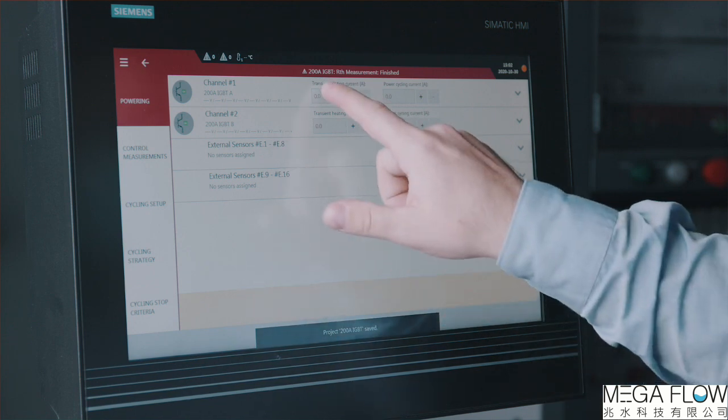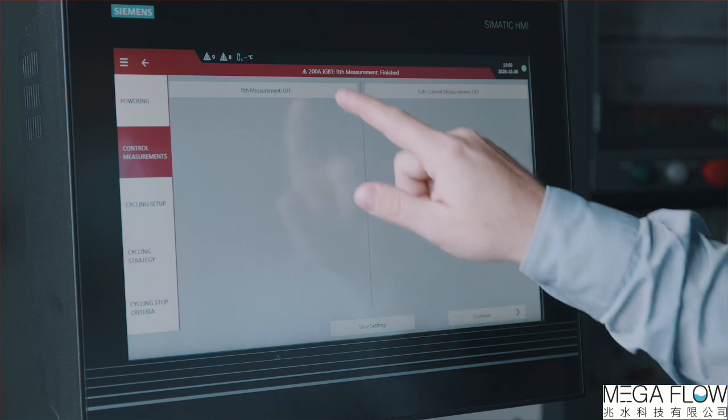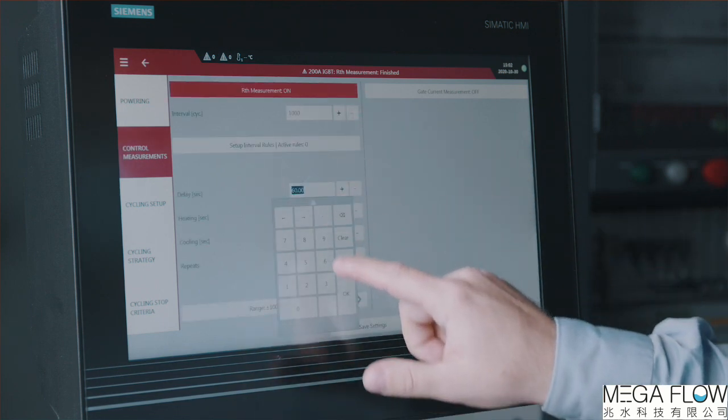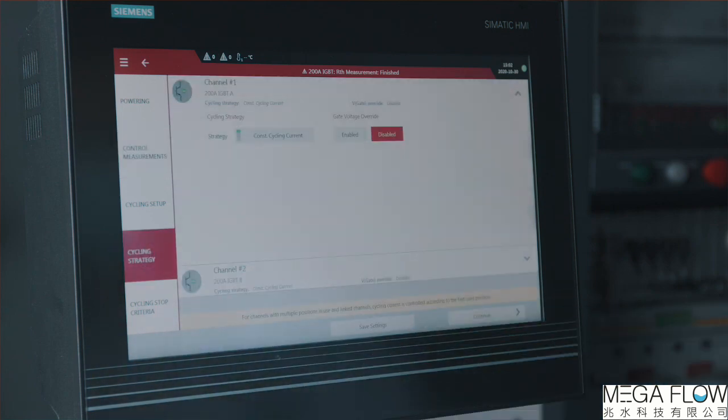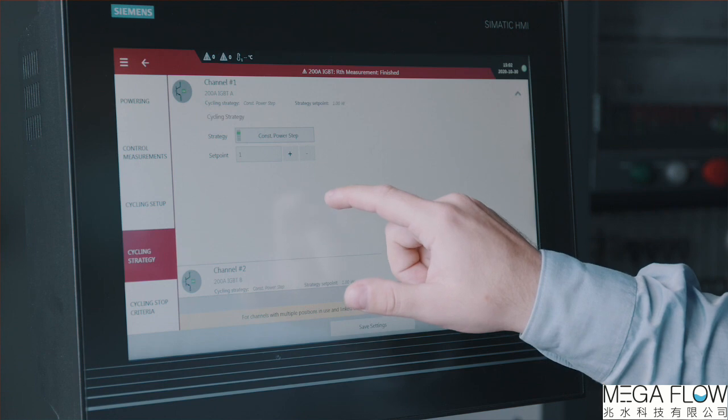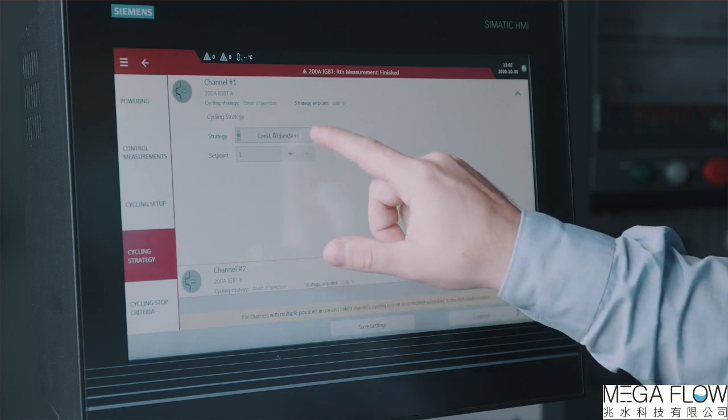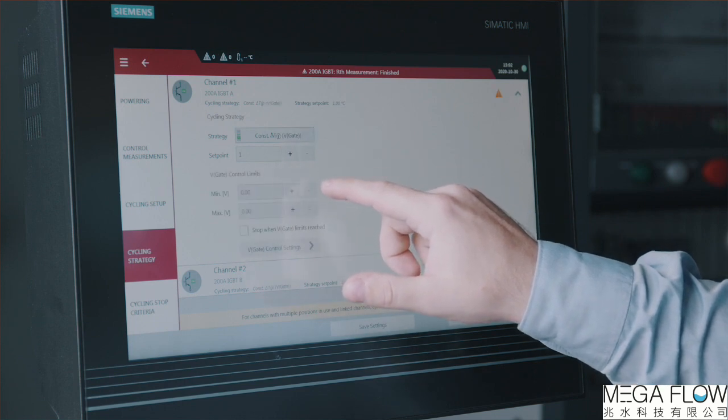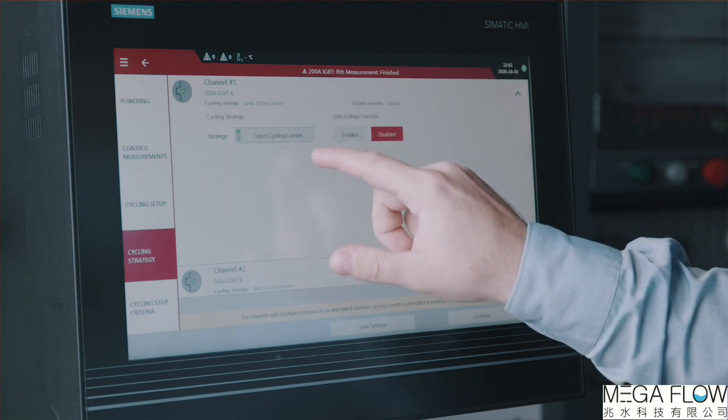Basic test parameters like heating current and timing parameters need to be defined. We can configure the automated thermal transient tests and optionally gate current measurement feature as well. There are various cycling control strategies defined in the control software. I can select how the system shall regulate the powering parameters with the device degradation. Current testing guidelines prescribe using fixed heating current independent of the device degradation to best mimic the real usage of the components. But there are optional methods to ensure constant junction temperature change or constant power step by regulating the heating current or gate voltage as well.